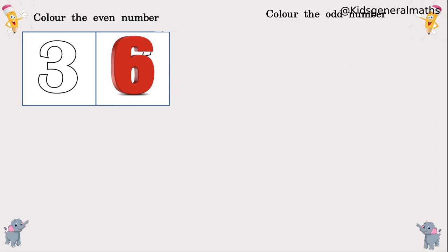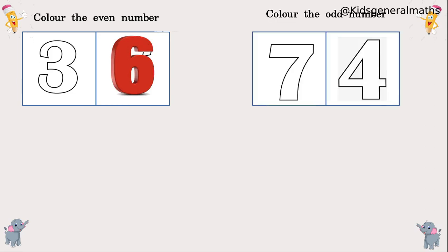Next we are going to colour the odd number. They give us 7 and 4. We know that odd numbers end with 1, 3, 5, 7, and 9. So which one is the odd number here? 7 is an odd number, so we are going to colour the 7.